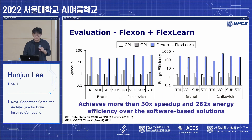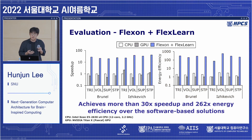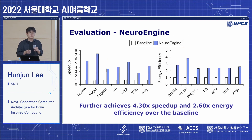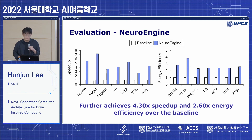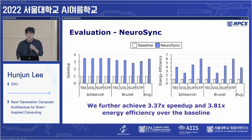For evaluation, we achieve tremendous improvements. By adopting FlexZone and FlexLearn, we achieve more than 30x speedup and 262x energy efficiency over software-based CPU and GPU solutions. By adopting NeuroEngine, we further achieve 4.3x speedup and 2.6x energy efficiency over the baseline. And by proposing NeuroSync, we further achieve 3.37x speedup and 3.81x energy efficiency over the baseline at the 64-chip scale.